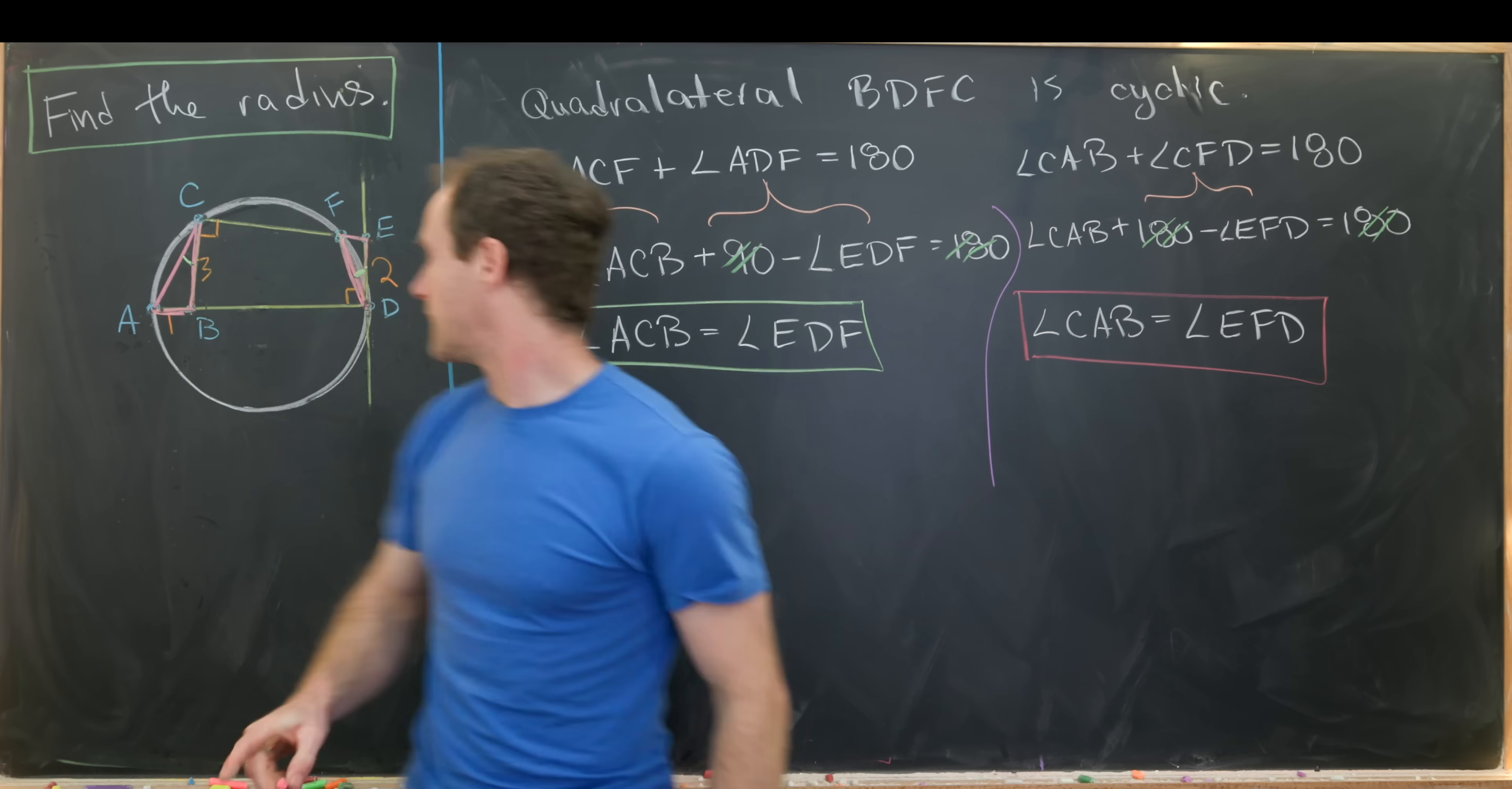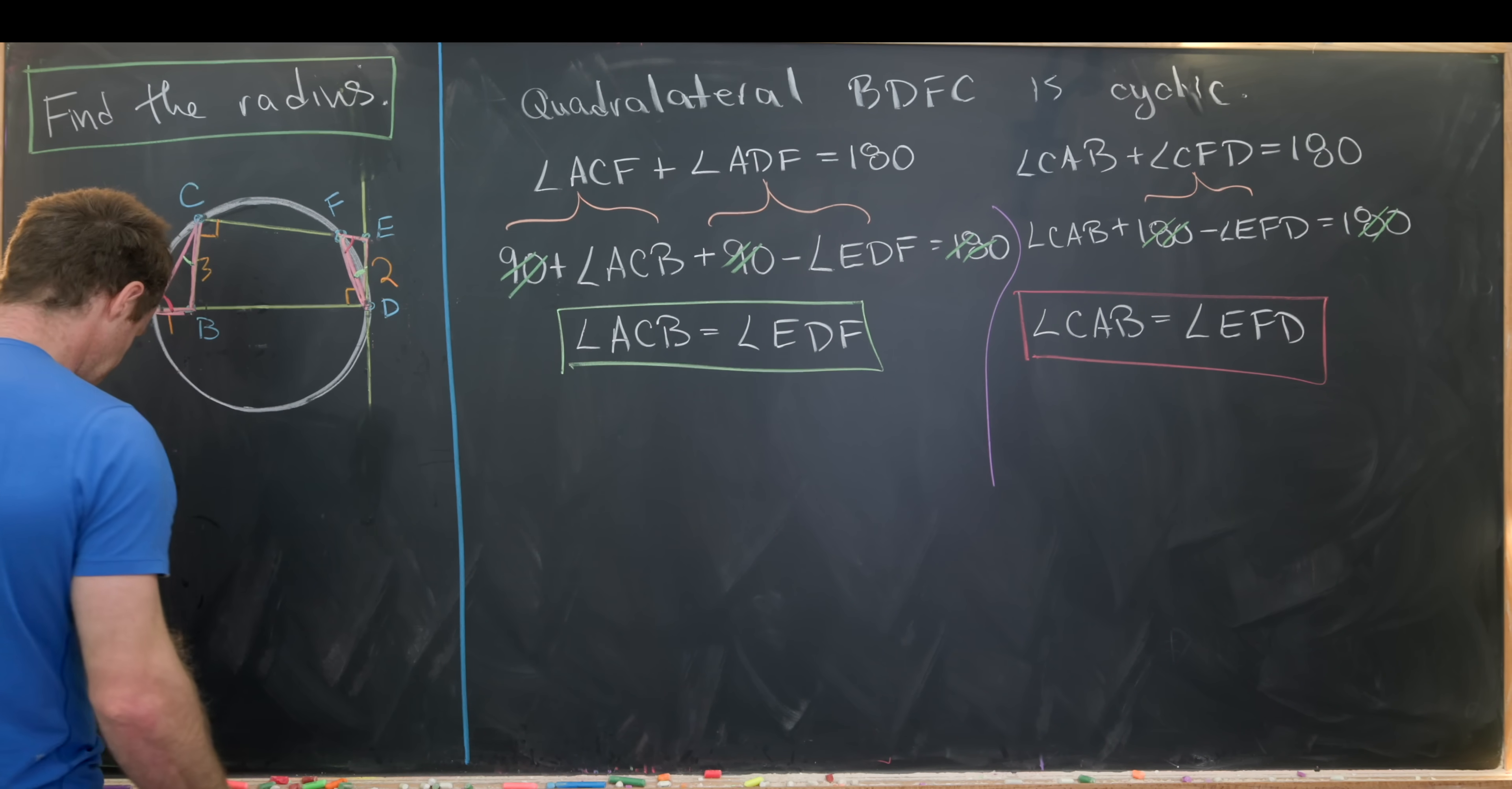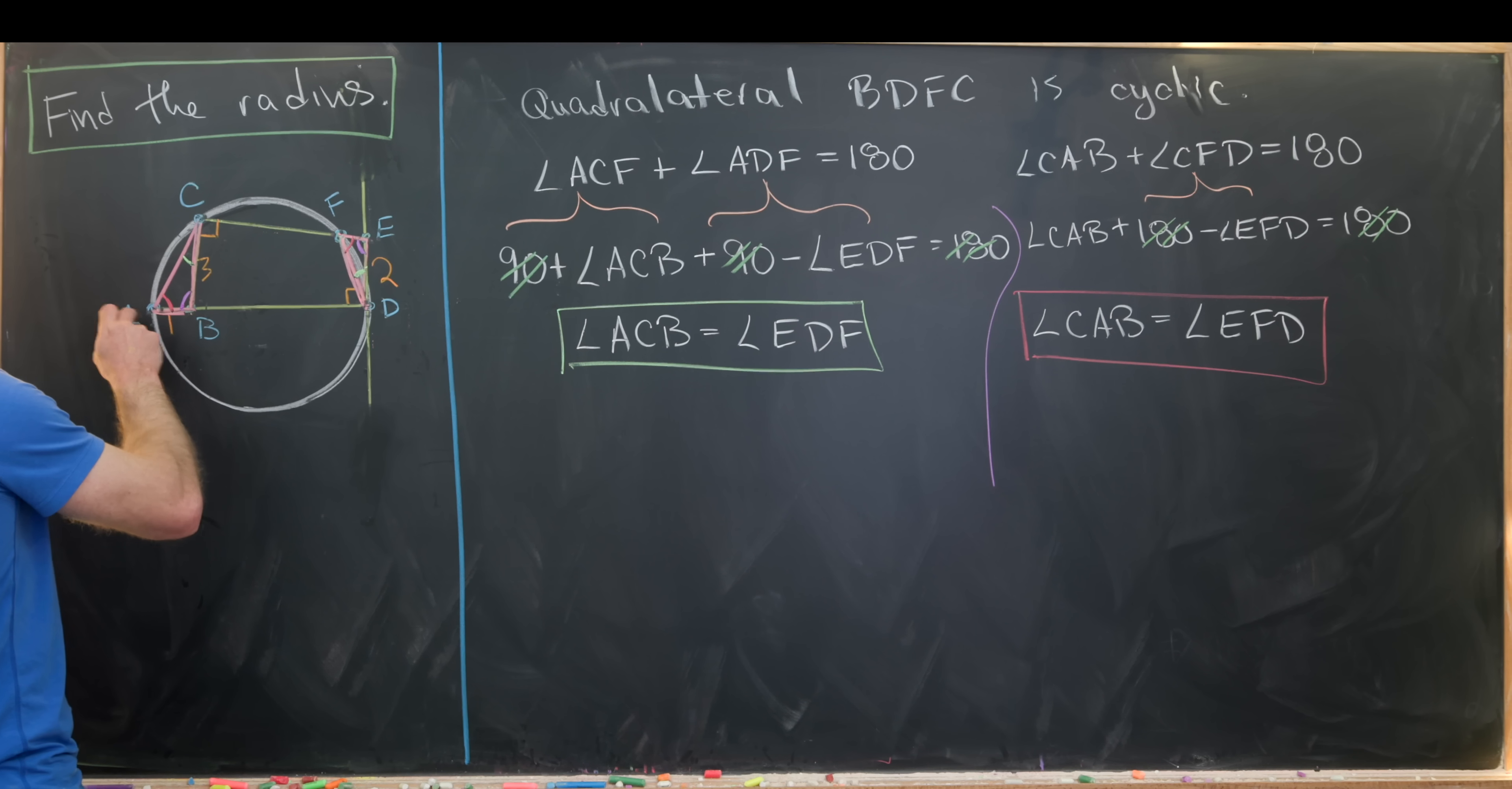And then note that that gives us this angle right here, EFD, is congruent to CAB. And then since the sum of the angles of a triangle equals 180, then we immediately get that this angle right here is the same thing as this angle right here, so FED and ABC.